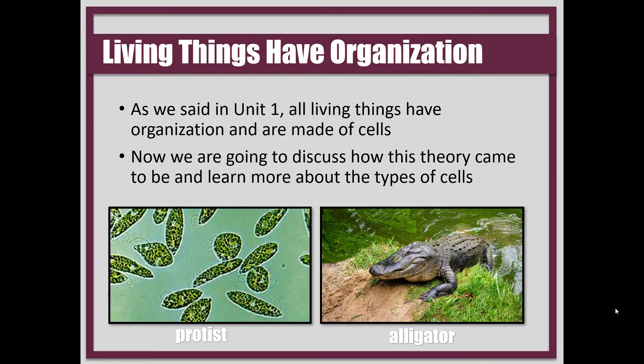In unit one, we talked about characteristics of living things, and so just a reminder that all living things have organization. All living things are made of cells, so from the smallest organisms like protozoa to larger organisms like the alligator you see on the screen, they're all comprised of cells.